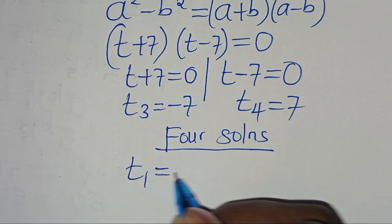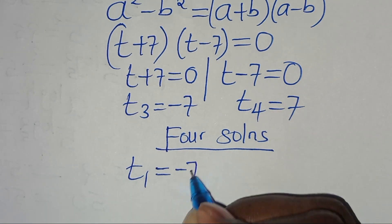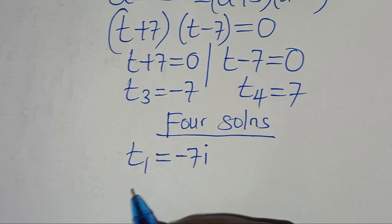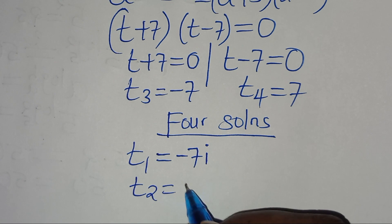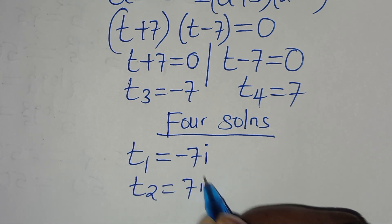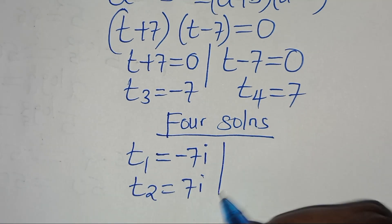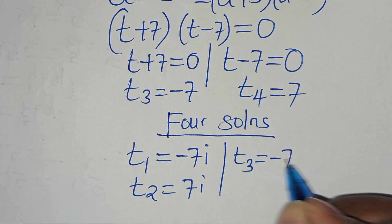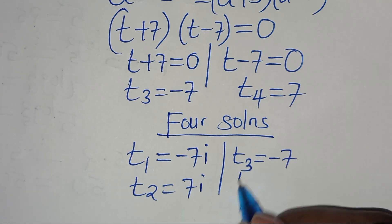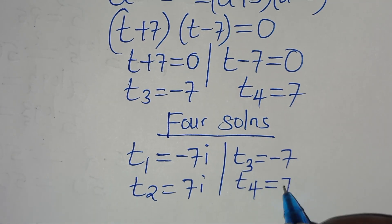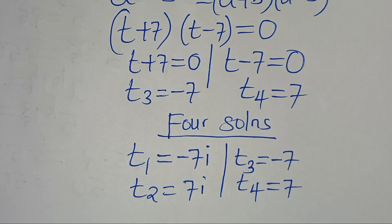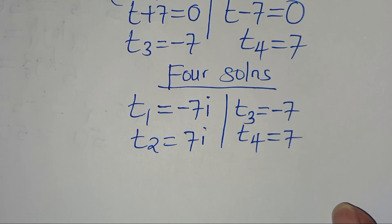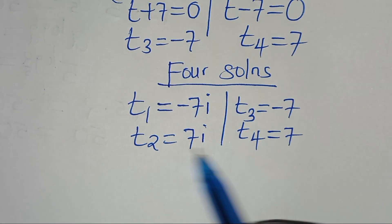We have four solutions: t₁ equals minus 7i, t₂ equals 7i, t₃ equals minus 7, and t₄ equals 7. The next step is to verify that these four solutions satisfy the original equation.